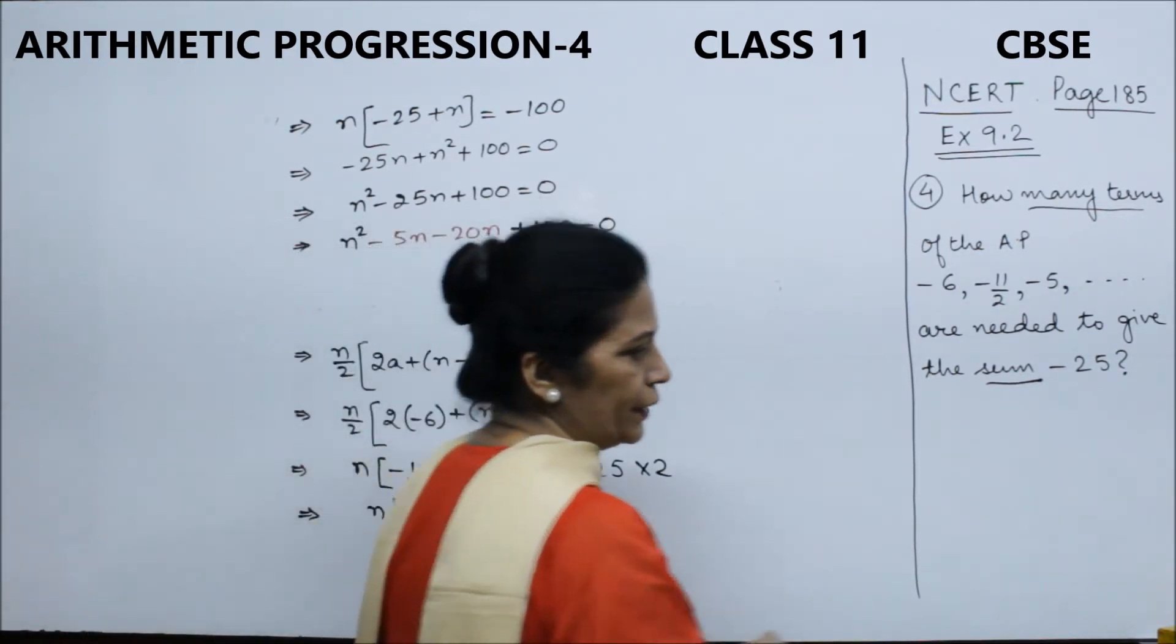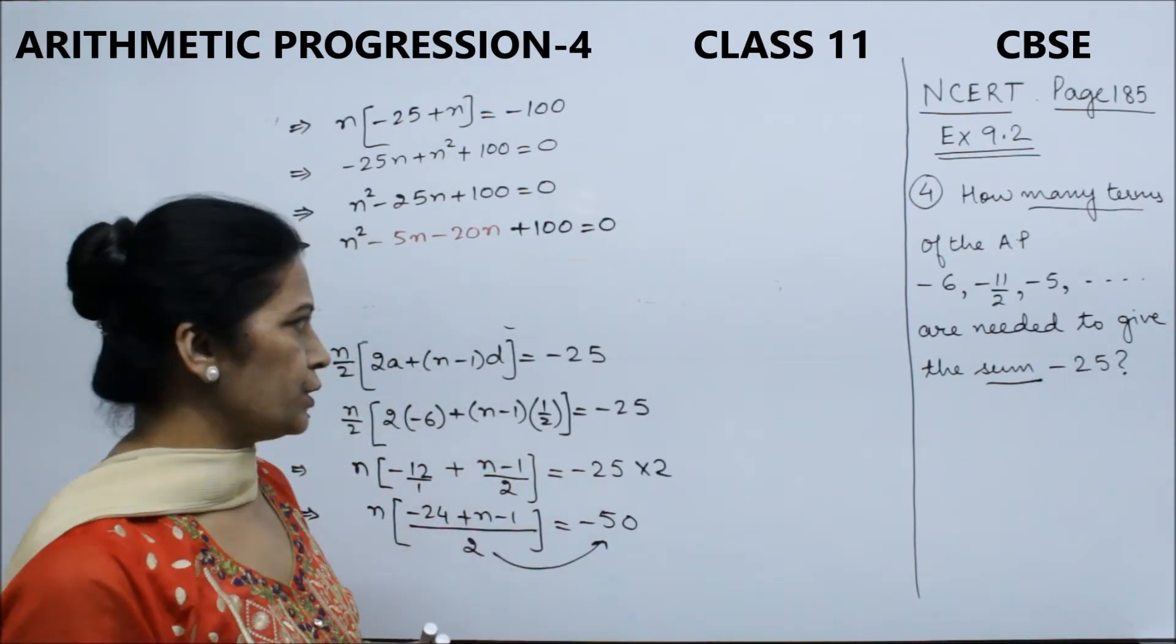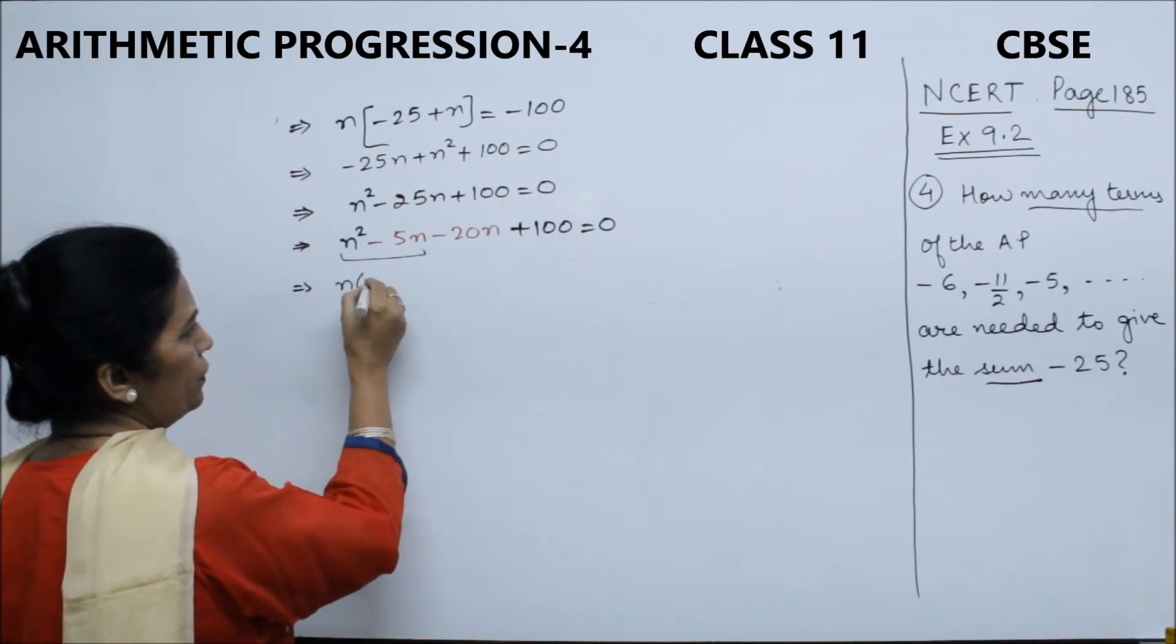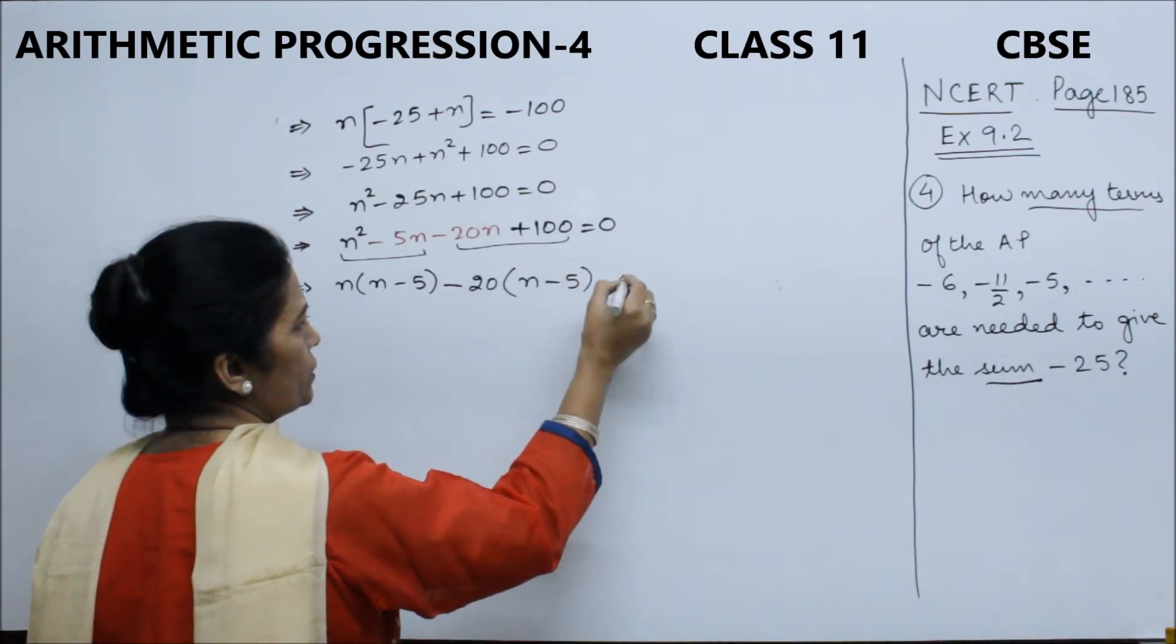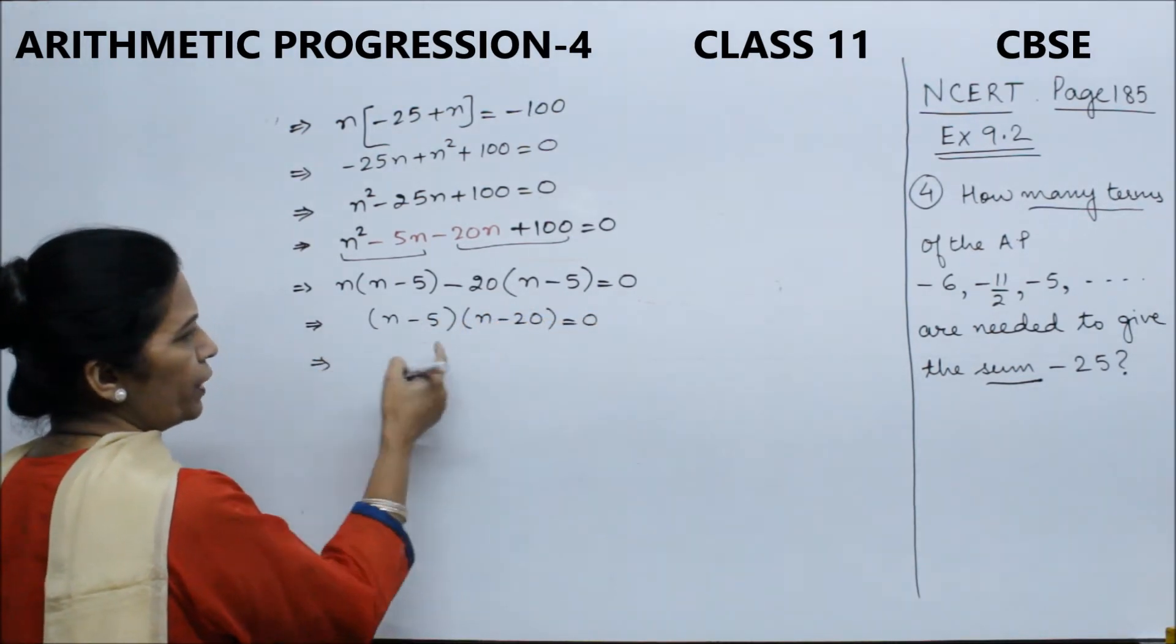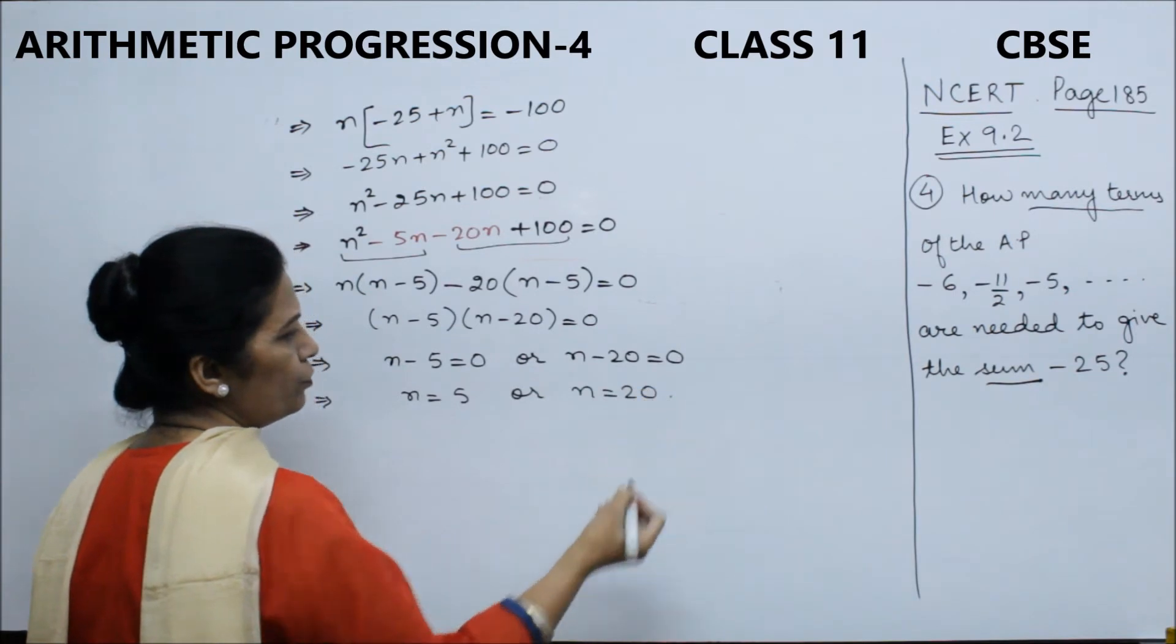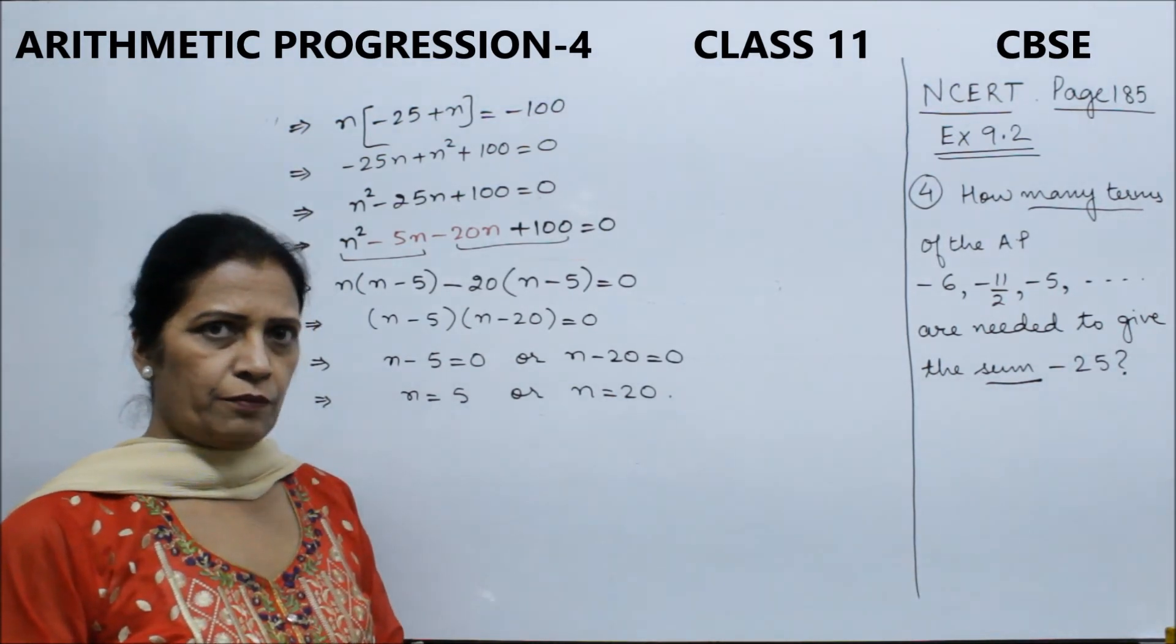For middle term splitting, if you have doubts, refer to my previous videos on splitting the middle term. When we simplify this by taking common terms, we get n(n-5) - 20(n-5) = 0. This gives us (n-5)(n-20) = 0. Since the product of two brackets is 0, at least one must be 0. So n = 5 or n = 20. Both are positive natural numbers, so we take both as answers.